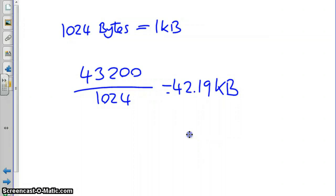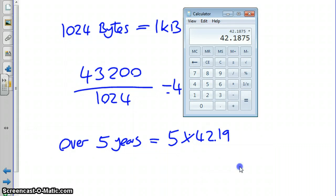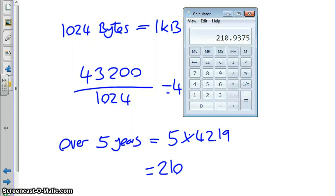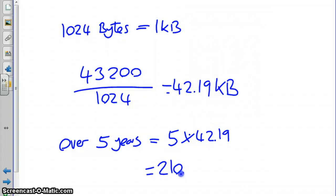So we can estimate that that person details, the person information, per year is going to take 42.19 kilobytes. So over five years, this will be 5 times 42.19. If we times it by the original value of 42.1875, then we do not lose precision. And this gives us 210.94 kilobytes over the lifetime of the program.